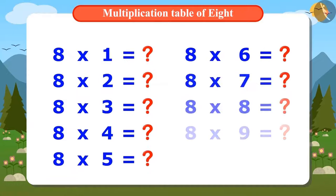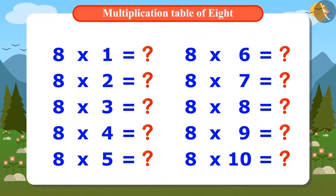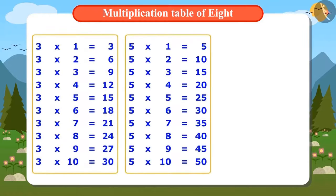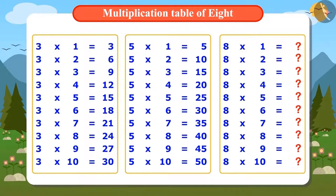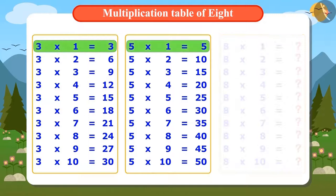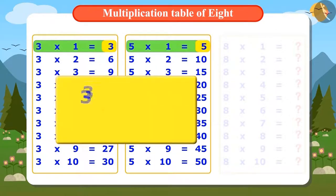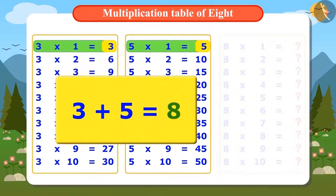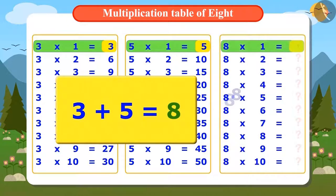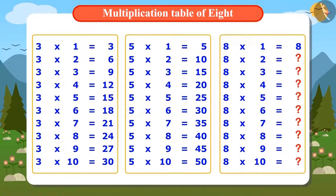Vandana doesn't know the multiplication table of eight, but she knows an easy trick to find it. She says: I can find the table of eight with the help of the multiplication tables of three and five. When we add the first numbers of the multiplication tables of three and five, we get eight — which is the first number of the multiplication table of eight. Similarly,